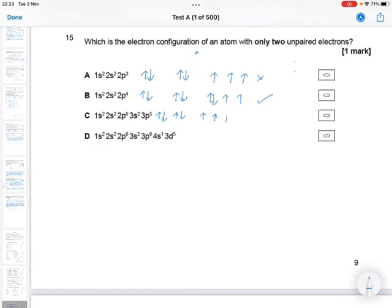3s2 and then 3p5, so one, two, three, four, five. So it's not that one. And then option D, we'll do this underneath: 1s2 2s2 2p6, 3s2.